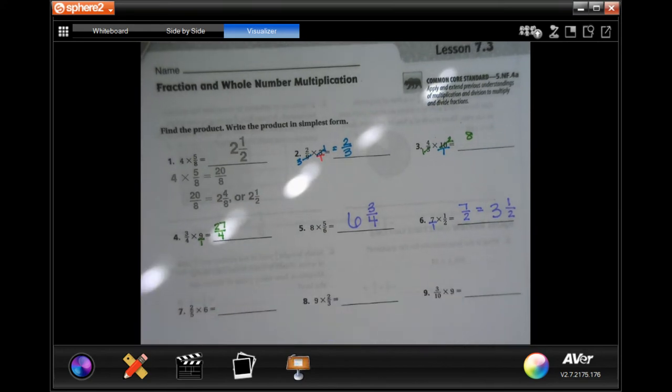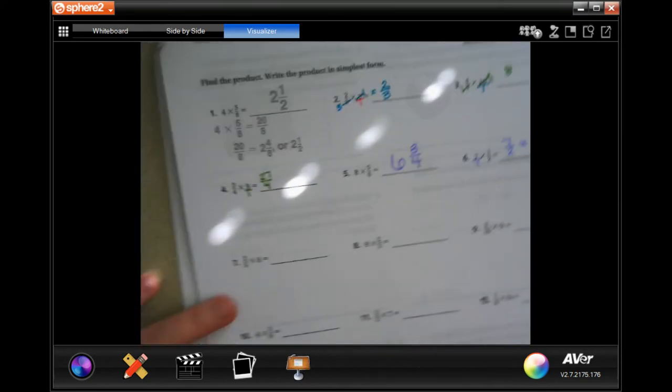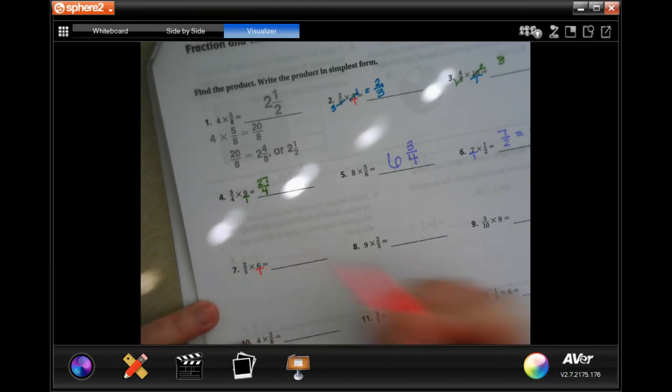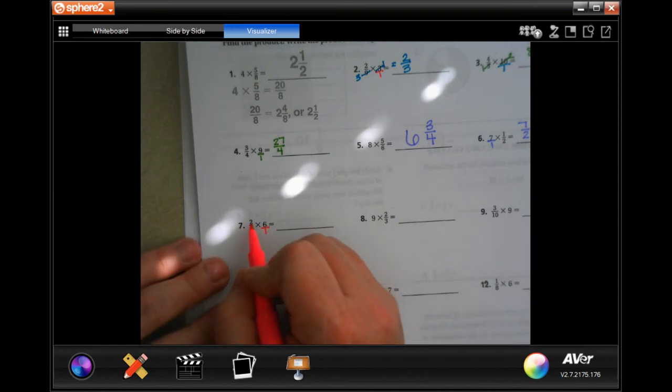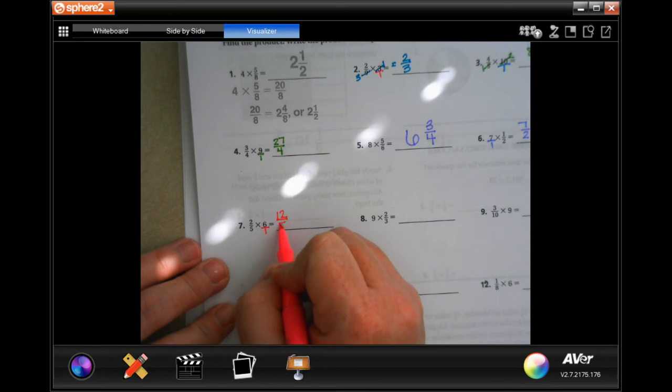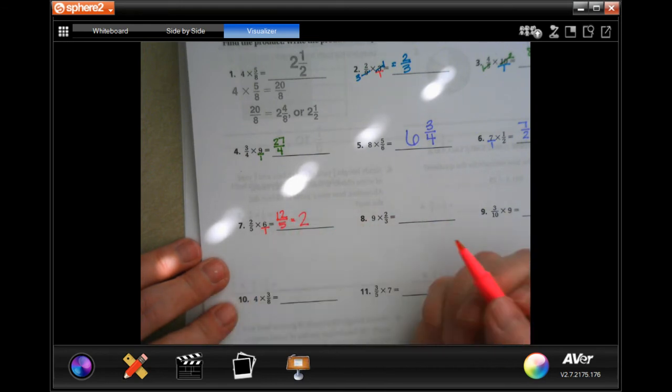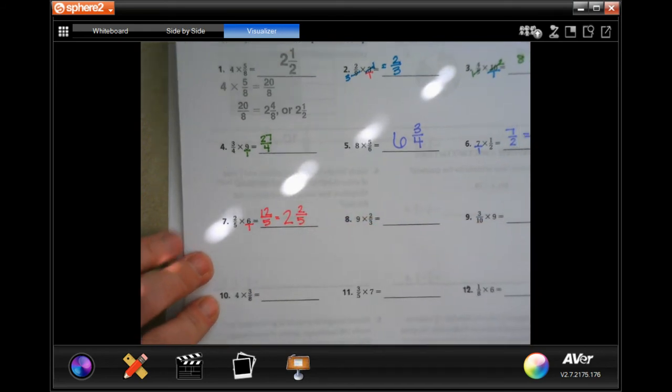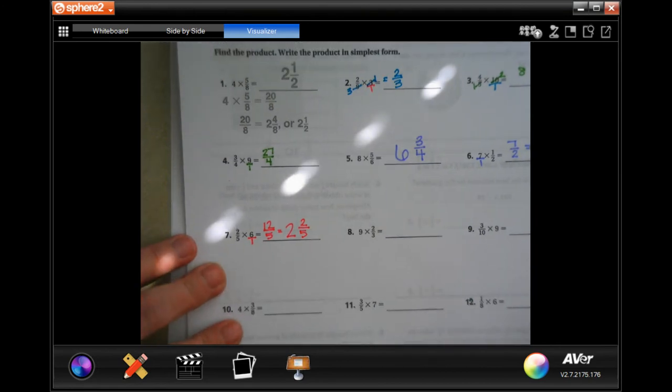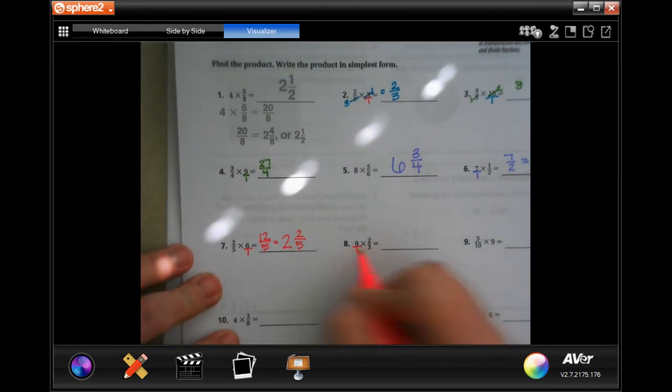So we're going to put our 6 over 1. Can't reduce anything because we need a top and a bottom. So now, 2 times 6 is 12. 5 times 1 is 5. 5 would go into 12, 2 times for 10. 12 minus 10 would be 2, and our denominator stays the same. Not so bad, guys, once you get used to it.